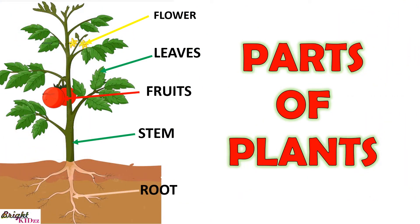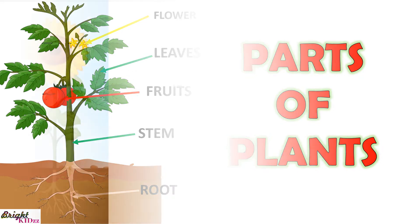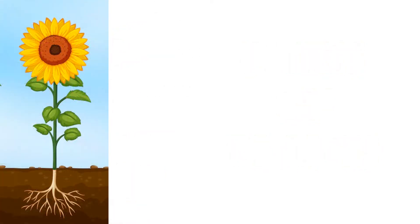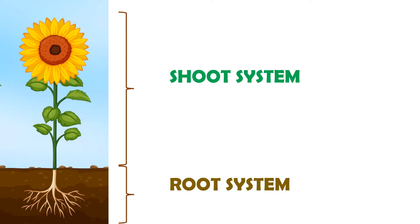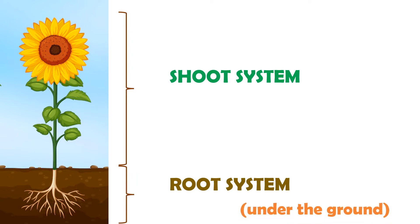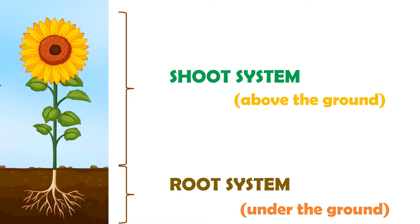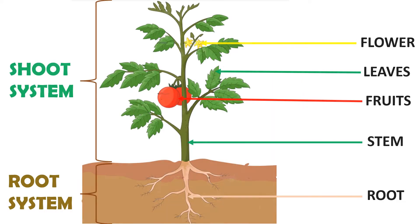Let's learn about different parts of a plant. Plants can broadly be divided into two parts: root system and shoot system. Root system is the part of the plant which is under the ground, while shoot system is the part which is visible and above the ground. Root system contains the root, while the shoot system contains stem, fruits, flowers, and leaves.